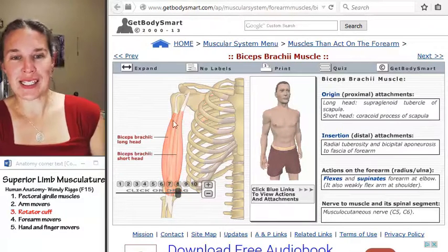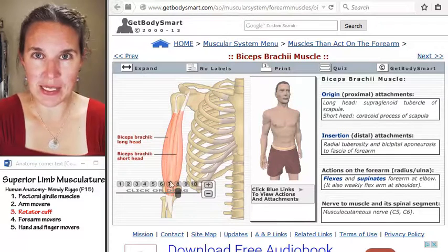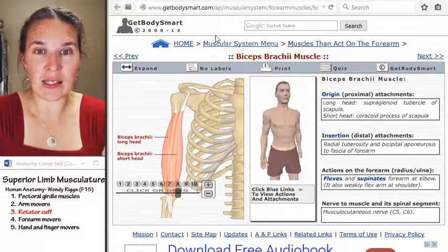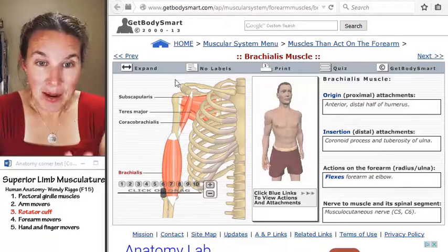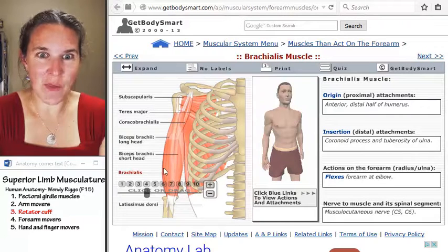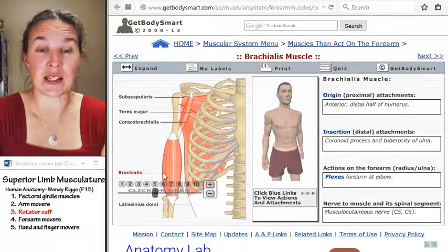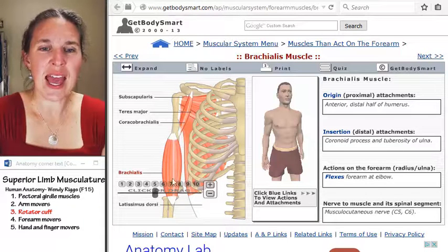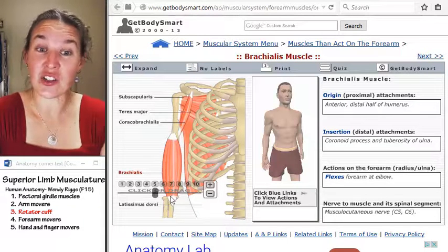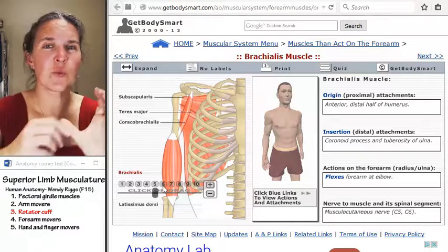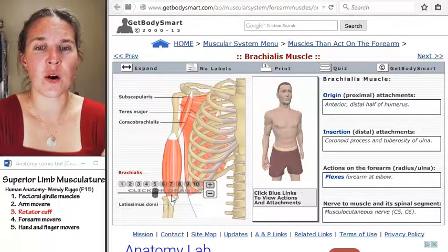Let's look at brachialis. Remember I said brachialis was deep to biceps. So if we peel back biceps, we would see brachialis underneath there. Biceps would go up over the top. In fact, let's put our biceps back on. See how biceps is on there? Let's get rid of biceps, and now we can see brachialis deep. It smears on to the shaft of the humerus, and it comes down and it attaches to the coronoid process of the ulna and is a really powerful forearm flexor.